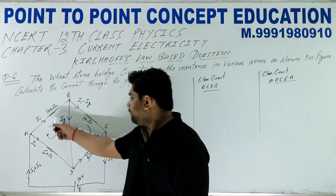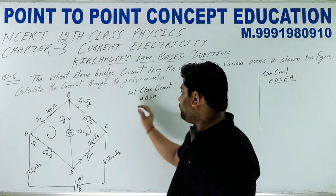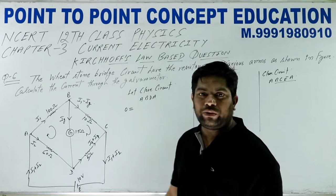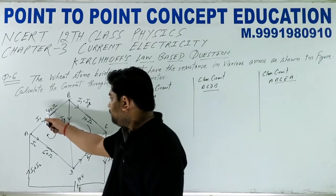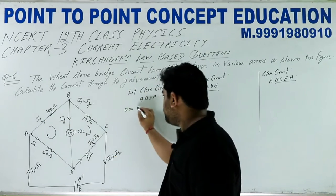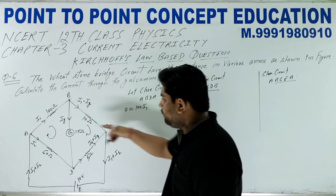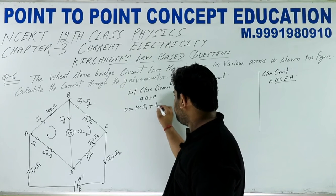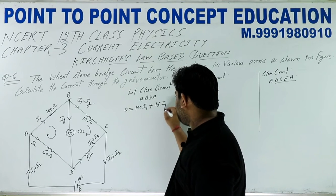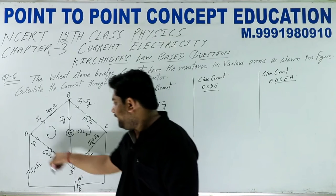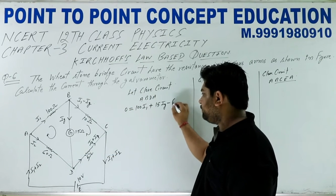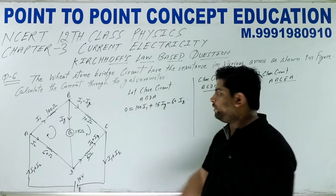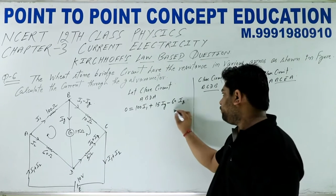यहाँ पर देखें, close circuit ABDA में कोई battery या cell नहीं है, तो EMF हो गई 0। Kirchhoff's का second rule यहाँ पर apply कर रहे हैं। यह clockwise direction में है तो 100·I1, यह वाला भी clockwise direction में है plus resistance 15, current flow कर रहा है IG, यह anti-clockwise direction में है तो negative 60·I2। तो Equation 1: 100·I1 + 15·IG - 60·I2 = 0।